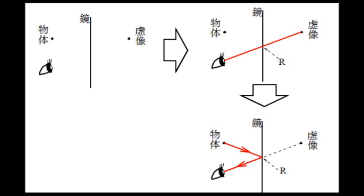その後は、問1のカッコ1からカッコ3でやった要領で、物体と入射点、目と入射点を直線で結び、物体から入射点、入射点から目の方向に矢印を入れると出来上がりです。問2のカッコ1からカッコ3をやってください。